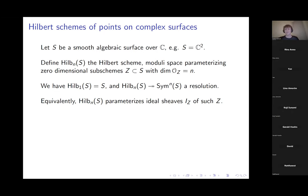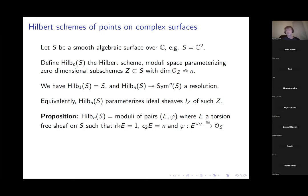We want to characterize ideal sheaves of zero-dimensional subschemes in some abstract way. The following proposition is fairly easy. The statement is that the Hilbert scheme described above is equivalent to the moduli space of pairs (E, φ), where E is a torsion-free sheaf on S.